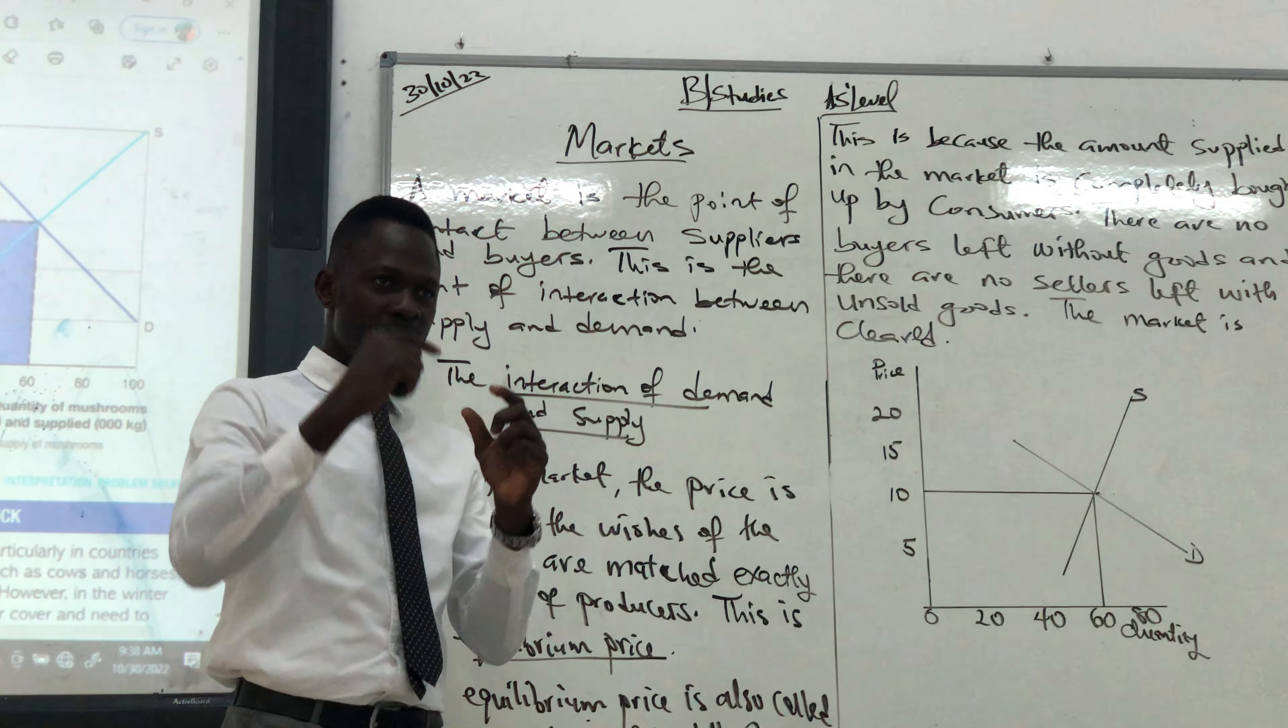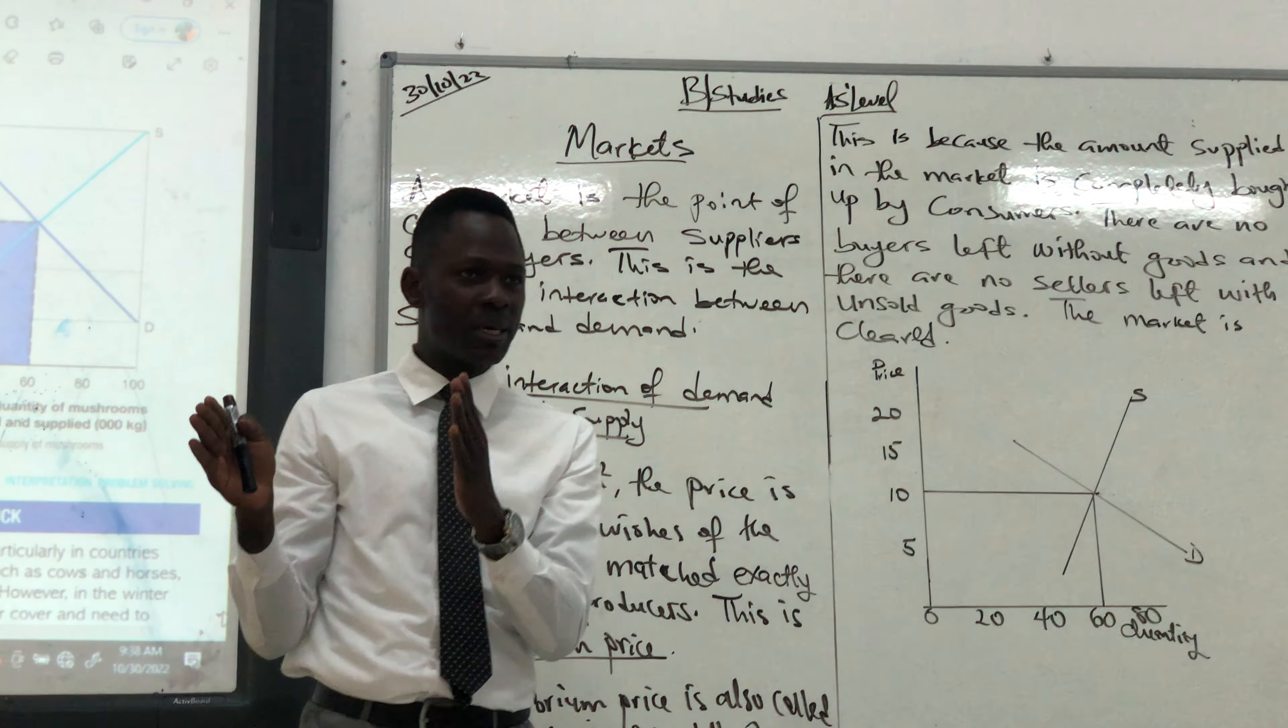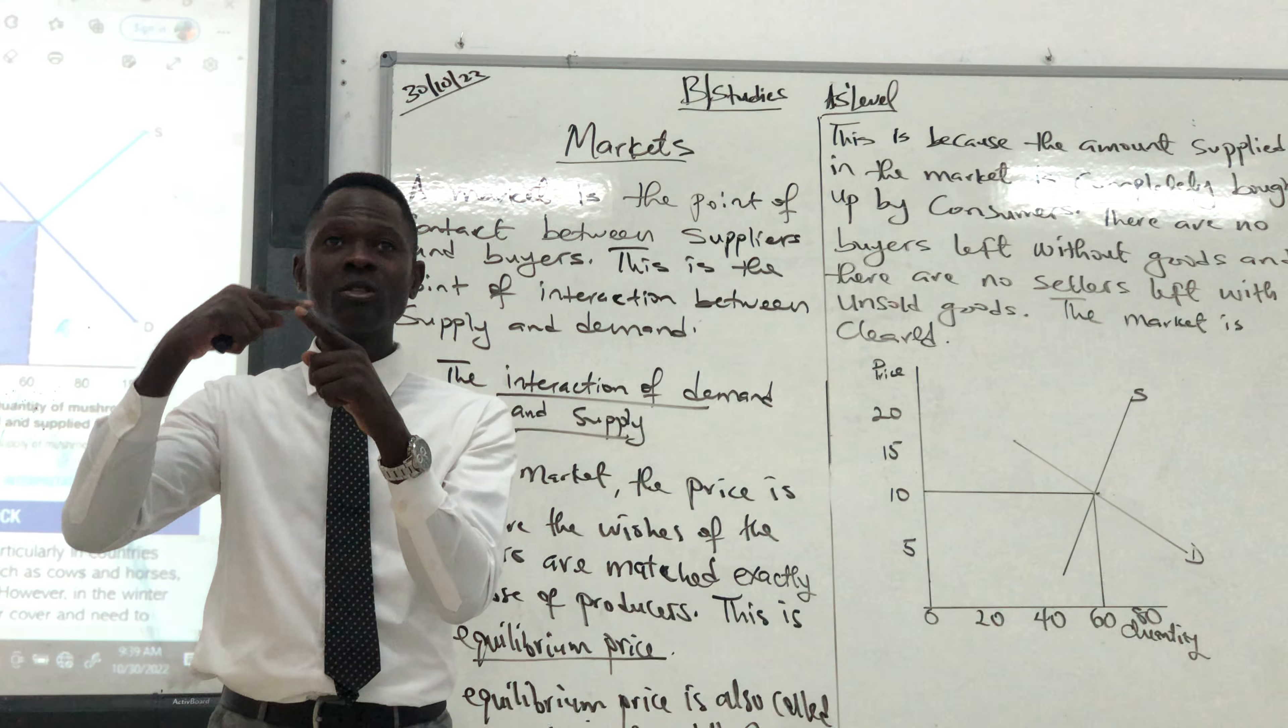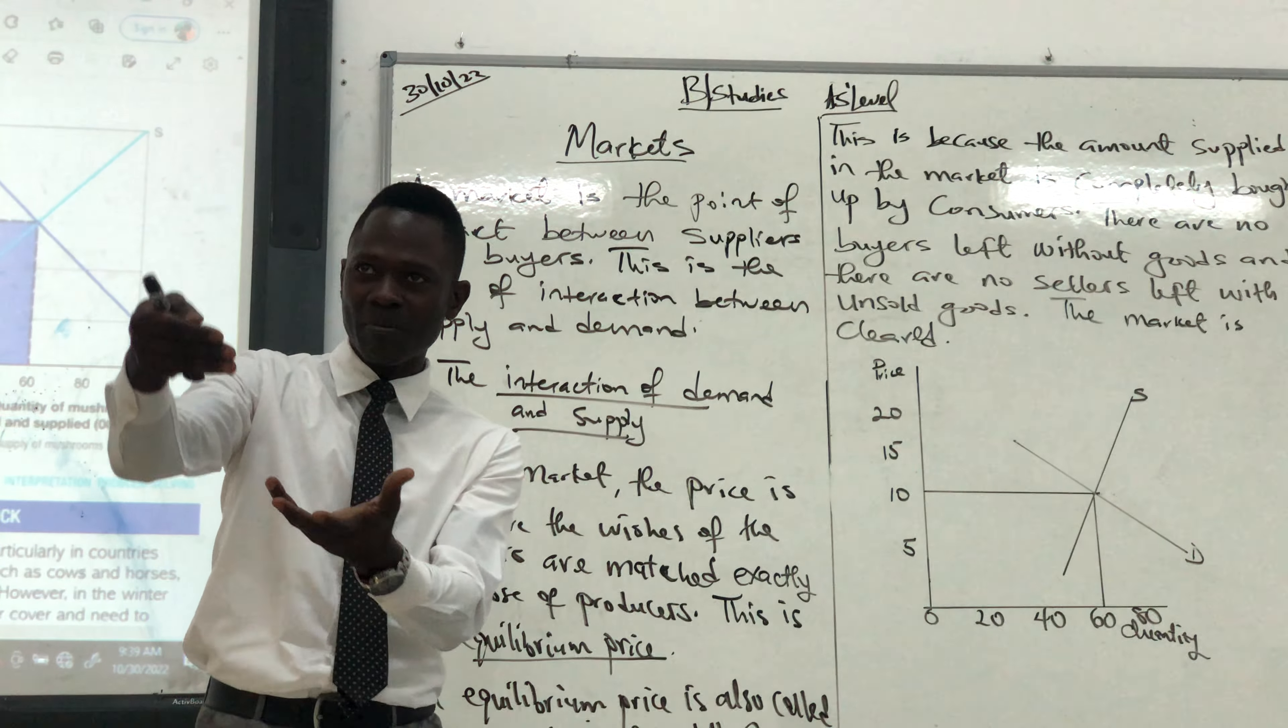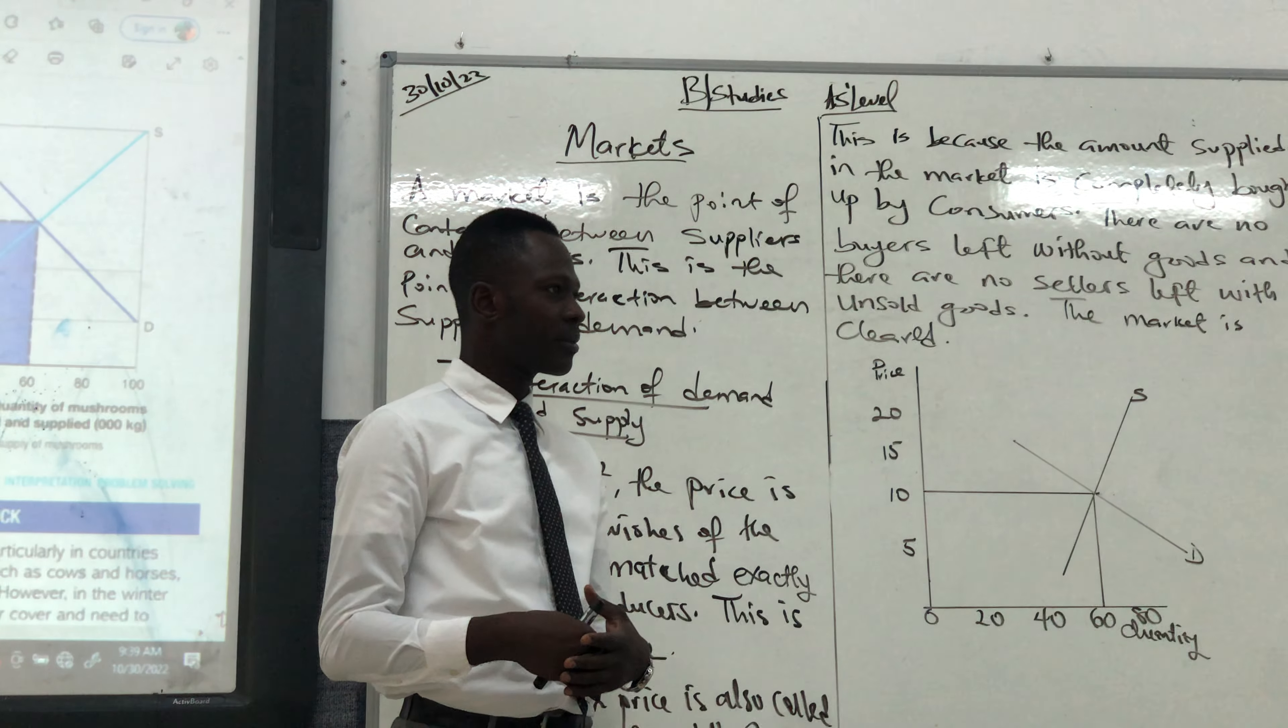Demand is separate, supply is separate, but they have to interact. Because if there's no interaction between demand and supply, there's no point for demand, there's no point for supply.